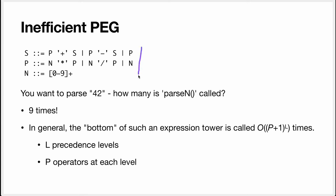In general, with such an expression tower, if you try to match the bottom, it's going to be called proportionally to (p+1)^l, where l is the number of precedence levels and p is the number of operators at each level. Here we have two precedence levels and two operators per level, so (2+1)^2 = 9. And if you take a language like Java or C, that's thousands of calls to this function, and that will do bad things to your performance.